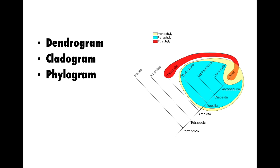Sometimes we can draw a dendrogram where time is better represented on the vertical axis. In this case, each of these branch points does correspond to a deeper and deeper time point in history, but they're not necessarily metric — it's not like a calendar with even time spacing of the evolution of these different shared derived characteristics or synapomorphies.